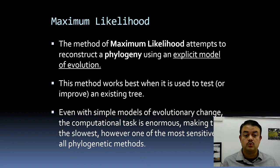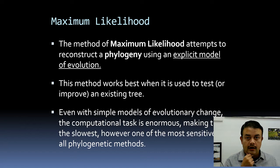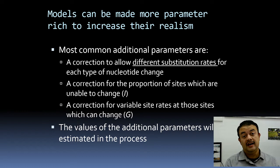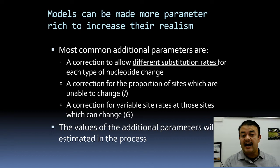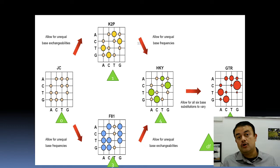Maximum likelihood attempts to reconstruct the phylogeny using the model of evolution. Even with simple models of evolutionary change, the computational task is enormous — that is why ML is very slow, and why we use heuristic approaches. Models can be parameter-rich or parameter-poor, and Occam's razor applies: simple models can be equally good. Each model can be further modified by parameters I (invariable sites) and G (gamma distribution).